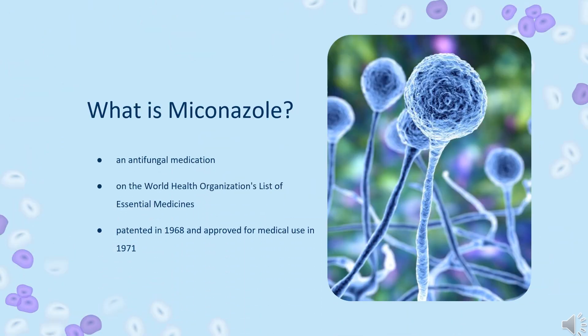Myconazole, sold under the brand name Monostat among others, is an antifungal medication used to treat ringworm, pityriasis versicolor, and yeast infections of the skin or vagina. It is used for ringworm of the body, groin, and feet, and is applied to the skin or vagina as a cream or ointment. Myconazole was patented in 1968 and approved for medical use in 1971, and is on the World Health Organization's list of essential medicines.